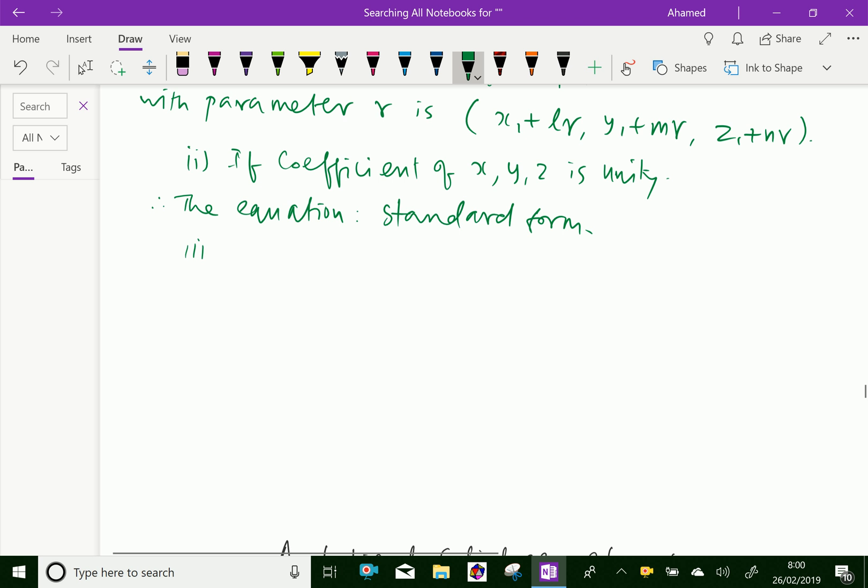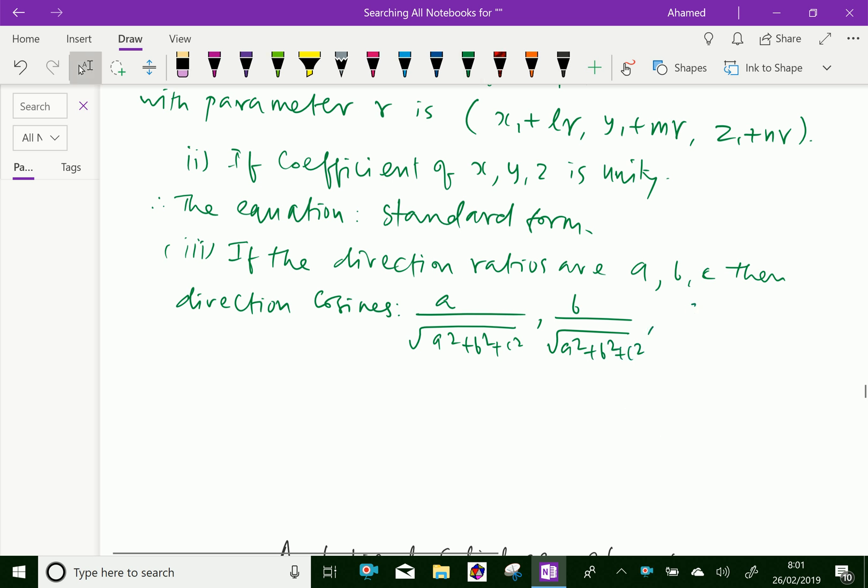Note three: If the direction ratios of the line are A, B, C, then direction cosines are A over square root of A square plus B square plus C square, comma B over square root of A square plus B square plus C square, C over square root of A square plus B square plus C square.